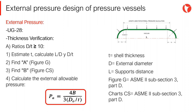The shell thickness verification method according to the ASME code, Section 8, Division 1, paragraph UG 28, is long and repetitive. The first step is to estimate a shell thickness that would bear the external load, according to the vessel diameter and support lines distance. Next, the geometric ratios of the vessel must be obtained in order to work with the corresponding charts and therefore obtain coefficients A and B.